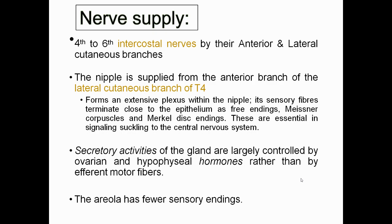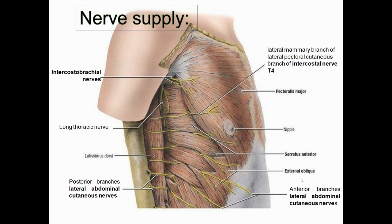The nerve supply of the breast is from the 4th to 6th intercostal nerves via their anterior and lateral cutaneous branches. The nipple is supplied from the anterior branch of the lateral cutaneous branch of T4. It forms an extensive plexus within the nipple, and sensory fibers terminate close to the epithelium with free endings, Meissner's corpuscles, and Merkel disc endings — essential for signaling suckling to the central nervous system. Secretory activity of the glands is largely controlled by ovarian and hypophyseal hormones rather than by afferent motor fibers.